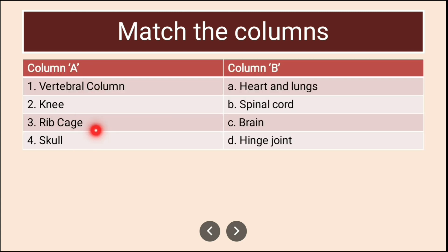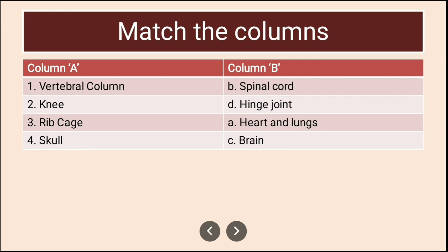Match the columns: Column A has vertebral column, knee, ribcage, and skull. Column B has heart and lungs, spinal cord, brain, and hinge joint. Vertebral column matches with spinal cord; knee matches with hinge joint; ribcage matches with heart and lungs; skull matches with brain. All answers were correct.